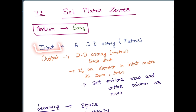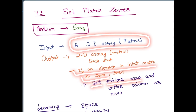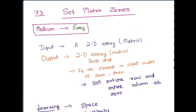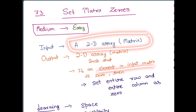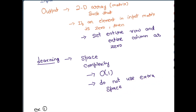In this particular problem, we are given an input which is a two-dimensional array — a matrix. The output we need to give is another two-dimensional matrix such that if any element in the input matrix is zero, then we need to set the entire row and entire column at that index as zero. The key learning in this problem is we need to do it using O(1) space complexity — we should not use any extra space to store information.